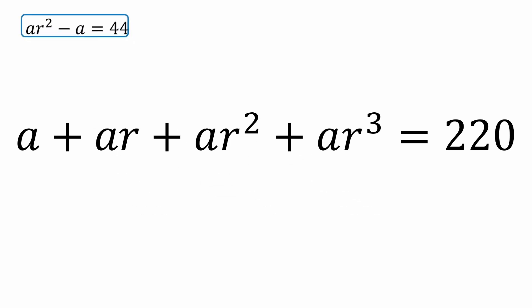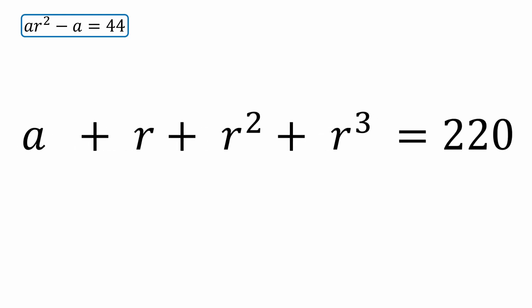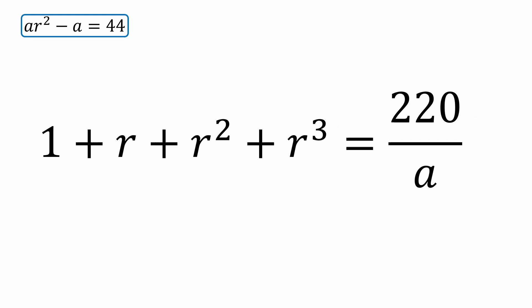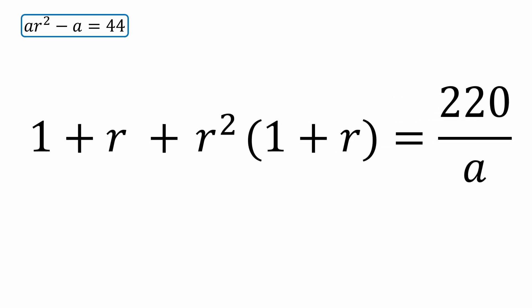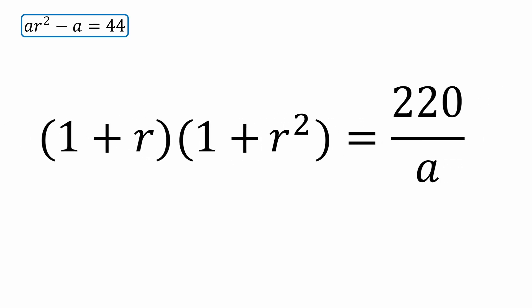Let's put the bottom equation on standby and focus on the equation equal to 220. First, factor out an a, then divide both sides by a. Now let's factor by grouping by pulling out a factor of r squared from r squared and r cubed. So now 1 plus r is a common factor, and that allows me to rewrite the left side as this. Let's put this equation on standby.